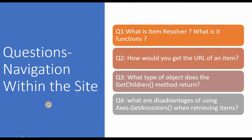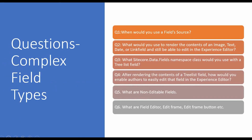Try to answer these questions in the comment section below. The next questions are from the topic of complex fields. The first is: when would you use the field source? The second is: what would you use to render the contents of an image, text, date, or link field and still be able to edit it in the experience editor? The third is: what Sitecore data field namespace class would you use with a tree list field? This is asked very frequently.